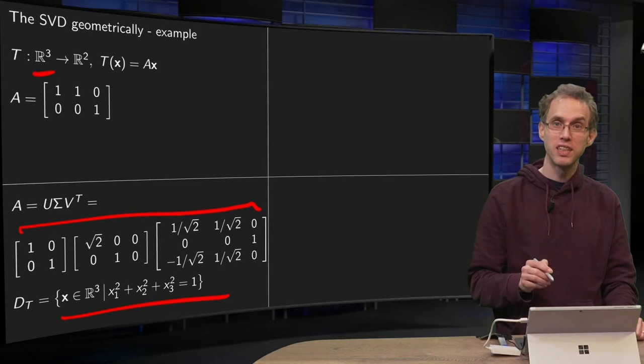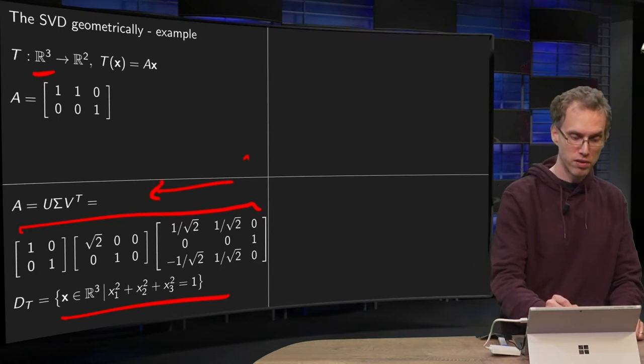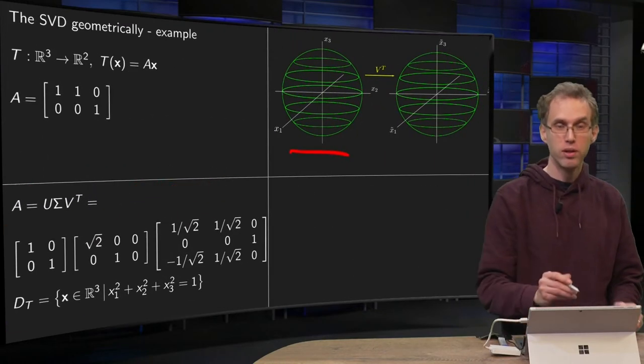So what happens geometrically here? Of course we go from right to left as usual, so we start with this matrix V^T. What is the matrix V^T doing with our unit sphere?